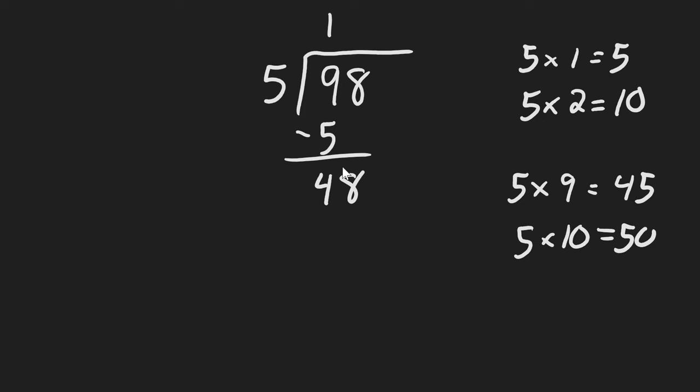5 goes into 48 nine times with a leftover of 3. And now there are no other numbers to drop down, and we're just left with our remainder 3. So the answer is 19 remainder 3.